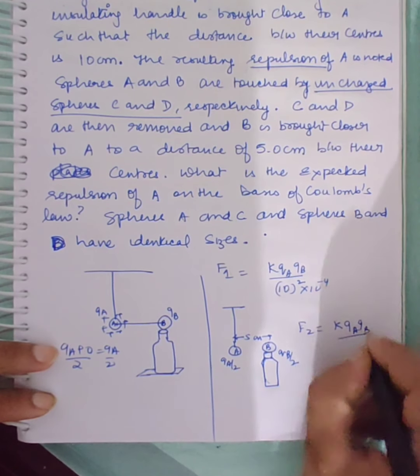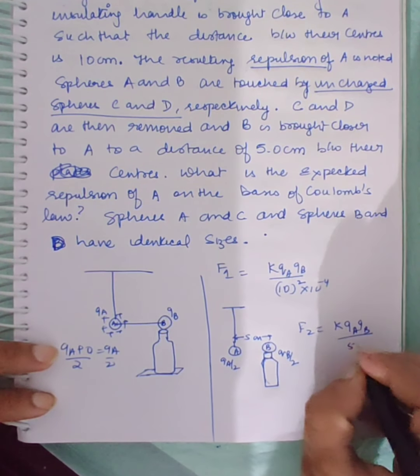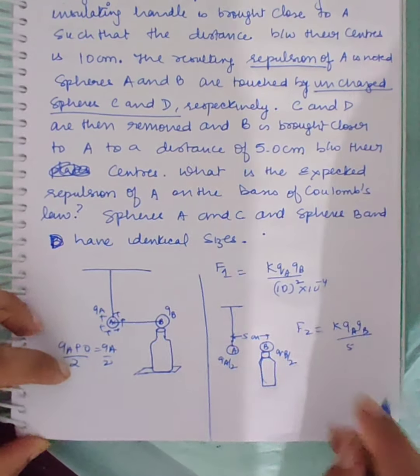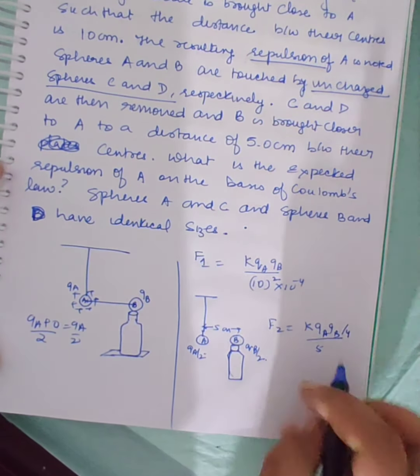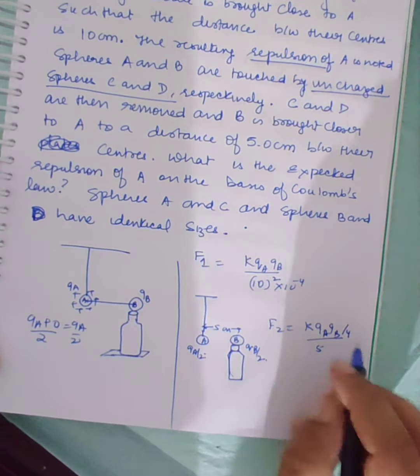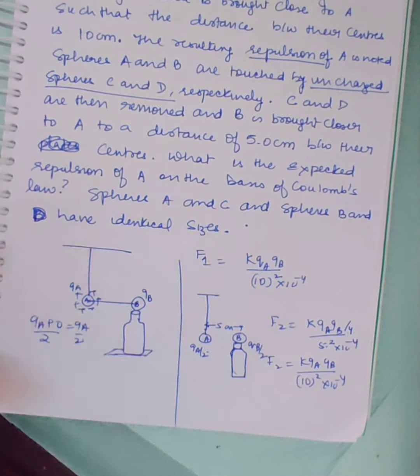F1 equals K QA QB divided by 10 squared times 10 to the power minus 4. F2 equals K QA QB divided by 25 into 400 times 10 to the power minus 4. You can see that both forces are the same.